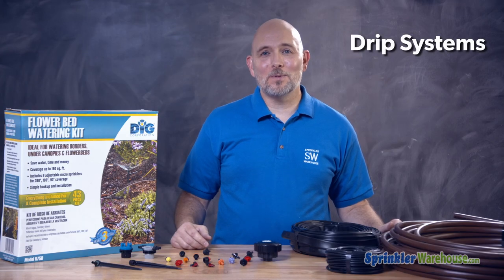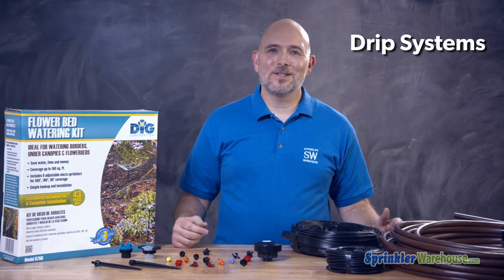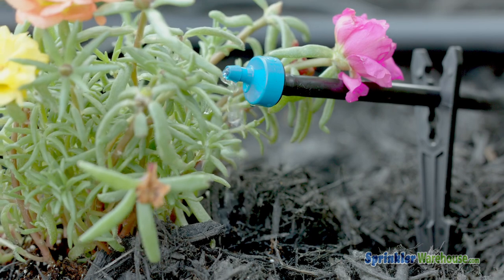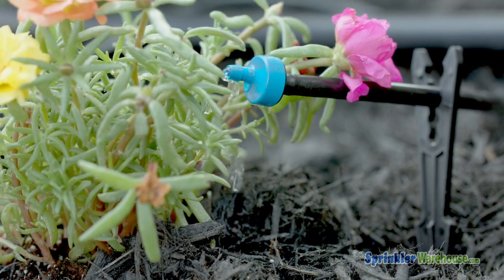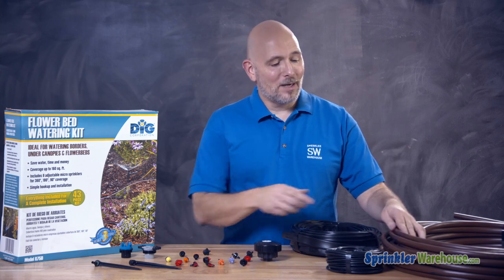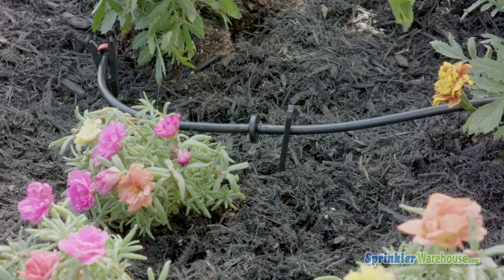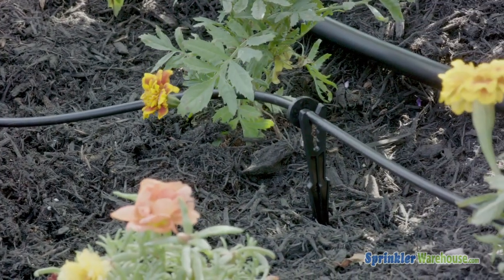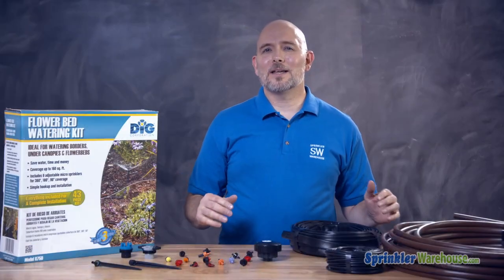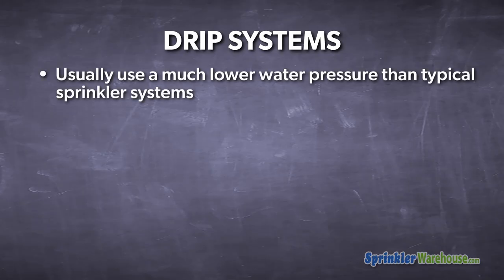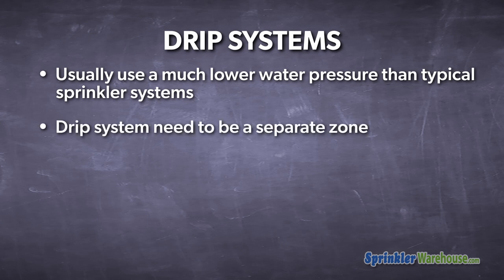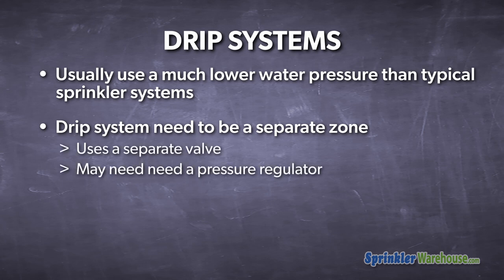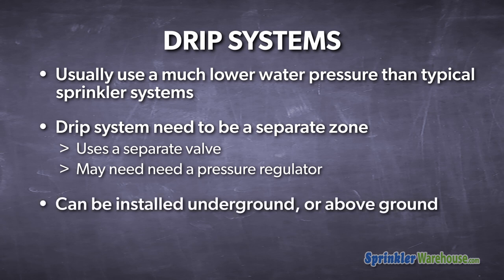Drip is different than a typical sprinkler system, although a drip system can be tied into your regular sprinkler system. In a drip system, water is delivered directly to plant roots through emitters. There is a drip hose with emitters embedded at regular intervals, or a series of tubes can be run to position emitters directly at plant roots, so each plant gets precisely the amount of water it needs. Drip systems use much lower water pressure than typical sprinkler systems. If incorporated into a sprinkler system, the drip system will be a separate zone with its own valve and a pressure regulator. Drip systems can be underground — i.e., subsurface — or above ground.